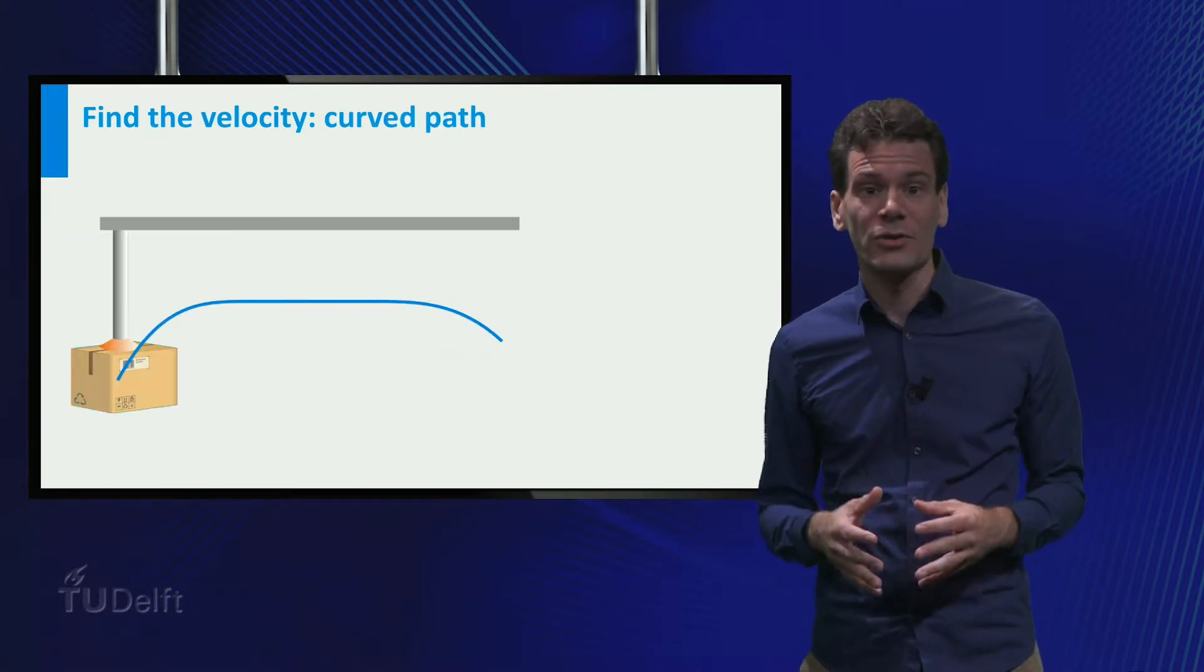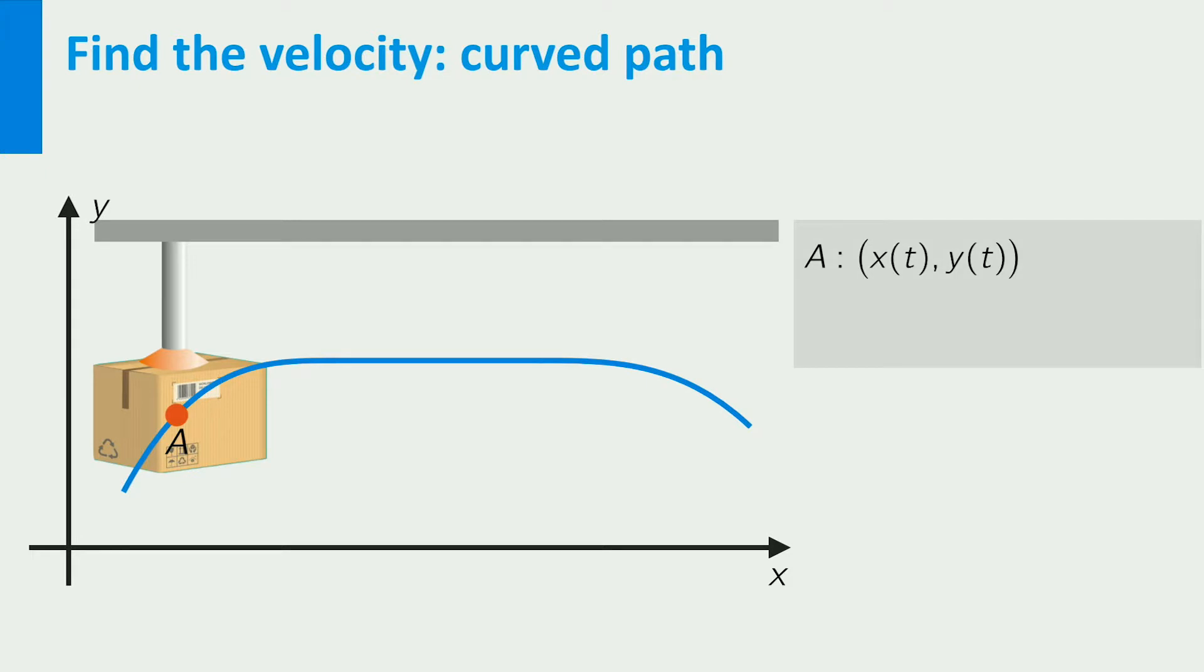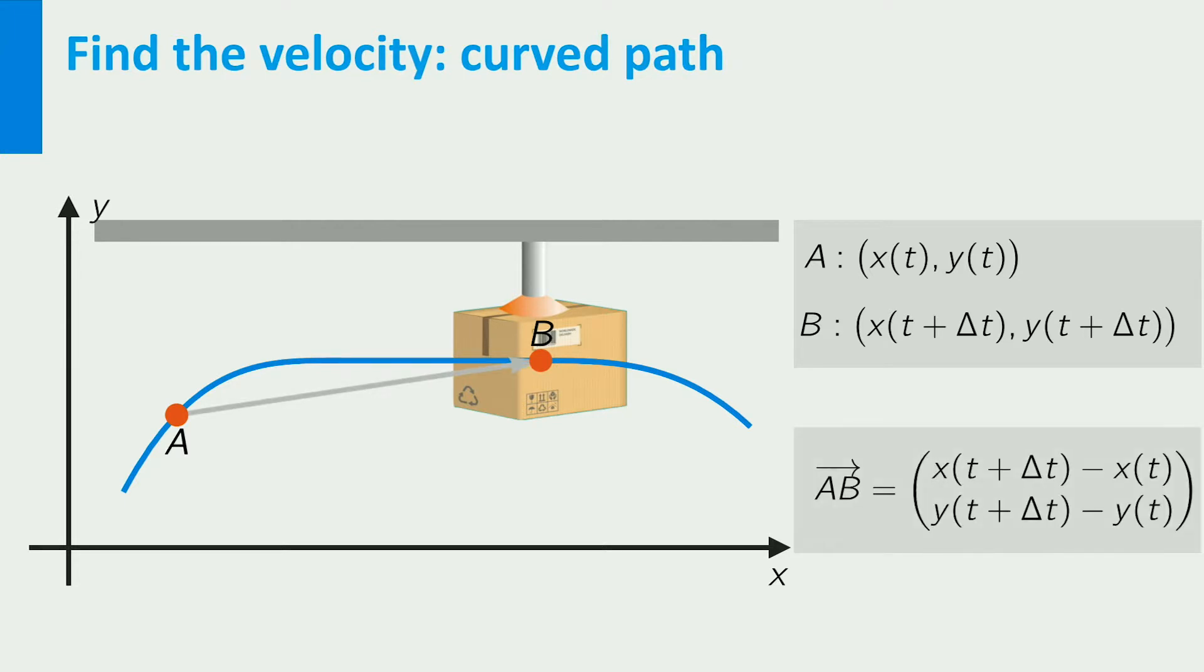The motion of the box gives a parametrization of the path. At some time t, it is at position a with coordinates x(t), y(t). A short time Δt later, it is at a new position b with coordinates x(t + Δt), y(t + Δt). The change in position is then given by the vector with components x(t + Δt) - x(t) and y(t + Δt) - y(t).